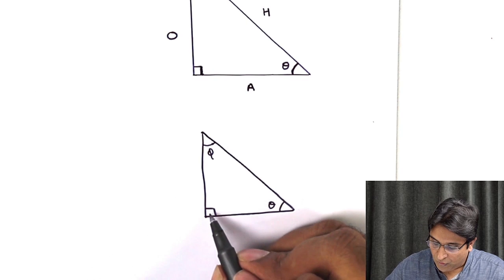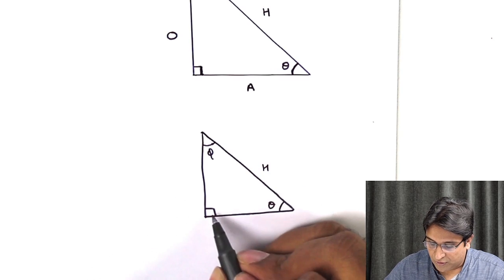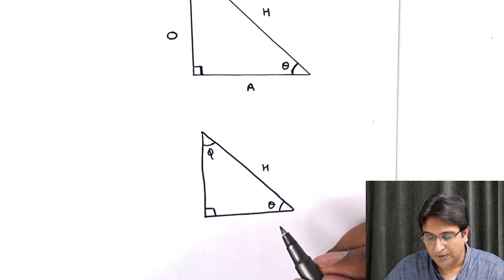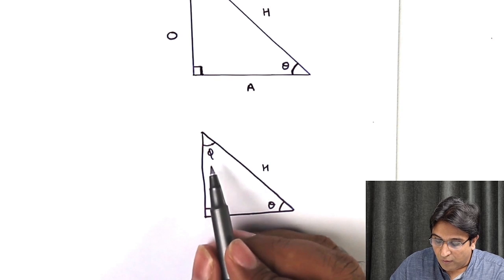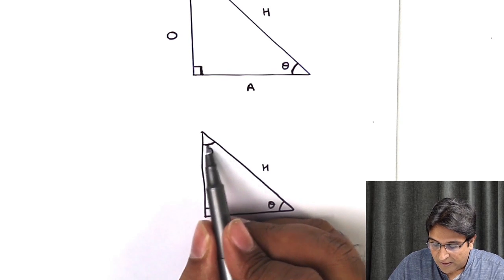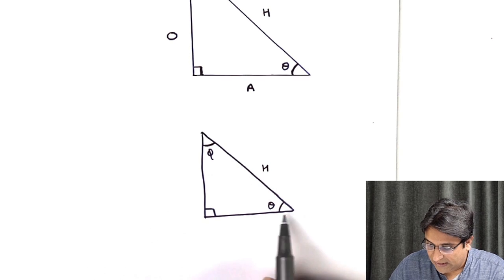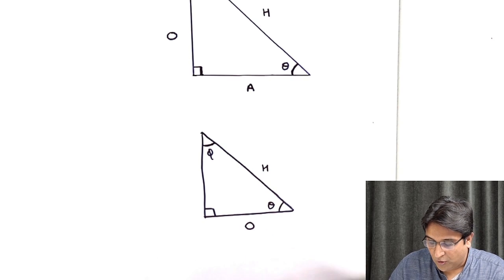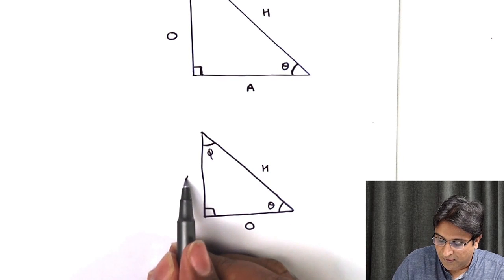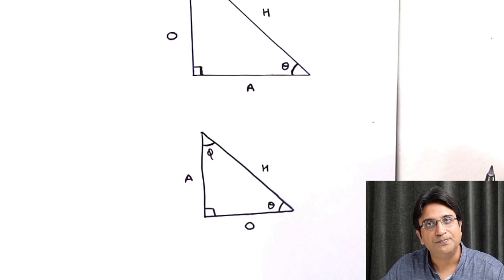Now, name all the sides. So, hypotenuse remains the same because it is always opposite 90 degrees. But the opposite is always opposite the chosen angle. So, now I am choosing phi. So, I have to ignore the arms which are making up phi. And this side here would then become the opposite. And what is left will become the adjacent.